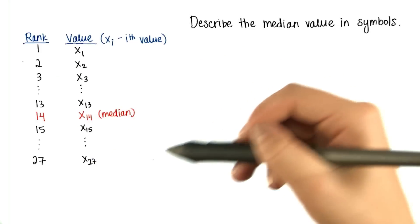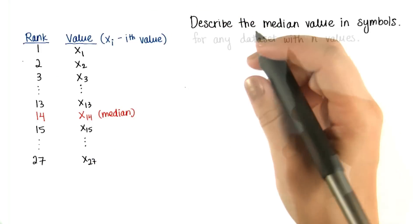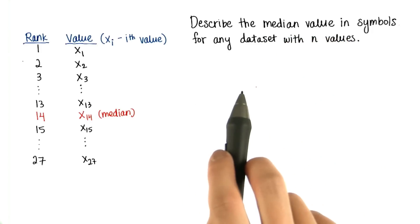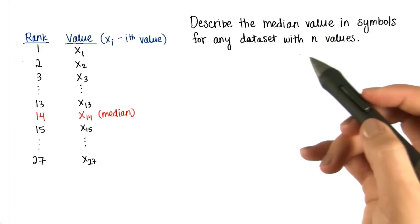So what about for any data set with n values? The median will be different depending on whether or not n is even or odd.